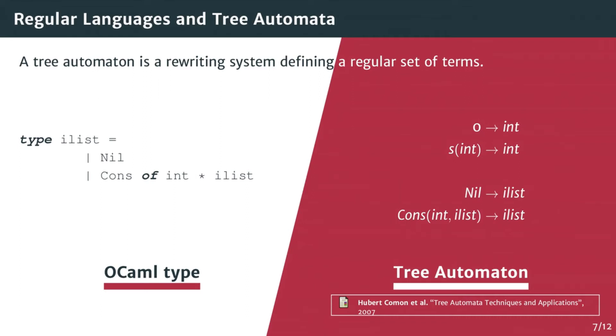Here is the tree automaton for the following type of integer list. It defines two more rules for nil and cons that closely match the OCaml type definition. Tree automata can even represent regular languages that are not possible to define in OCaml. For instance, here is the tree automaton recognizing even numbers. This can be seen as the subtype of int. In our case, we call it a regular language type.